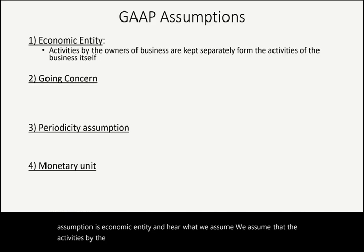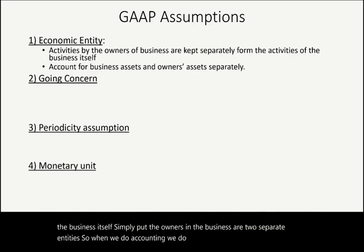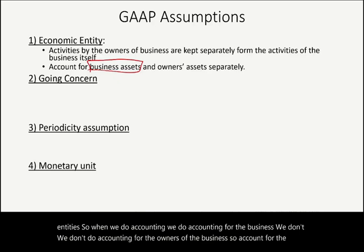Simply put, the owners and the business are two separate entities. When we do accounting, we do accounting for the business — we don't do accounting for the owners. We account for the business assets, the business liabilities, and the business equity separately from that of the owners. That's all the economic entity assumption is.